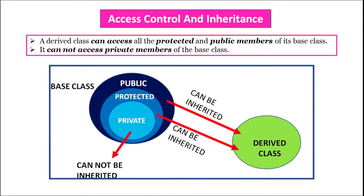Access control and inheritance: A derived class can access all the protected and public members of its base class, but it cannot access the private members of the base class. All the public and protected members become the members of the derived class, but private members of the base class are never inherited.